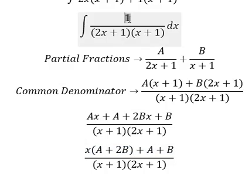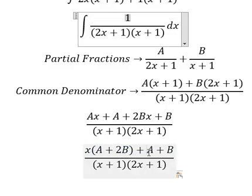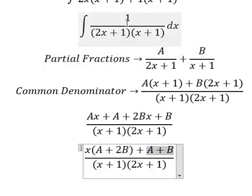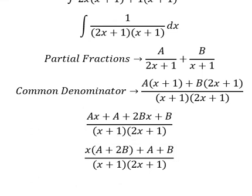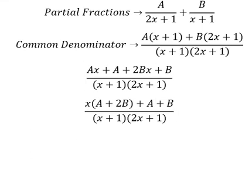So we have 1 on top. That means A + 2B equals to 0, and A + B equals to 1. Now we create the system of equations.